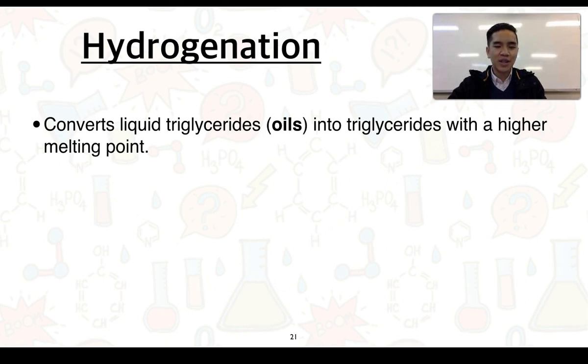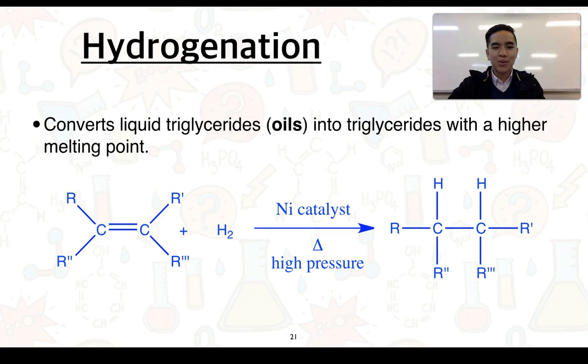Hydrogenation converts liquid triglycerides, what we call oils, into triglycerides with a high melting point. We can see below a general equation for this hydrogenation process. The key thing is the presence of a carbon-to-carbon double bond. This can react in an addition reaction with hydrogen. So the hydrogen adds across the double bond and one hydrogen atom bonds to each of the carbons.